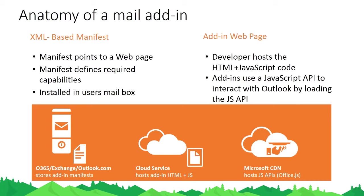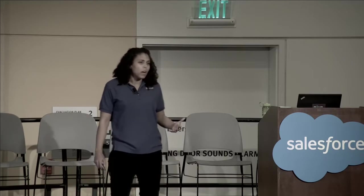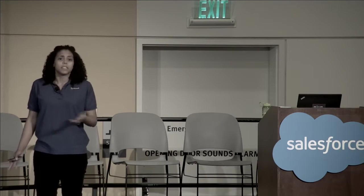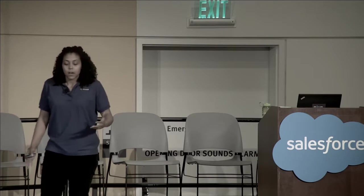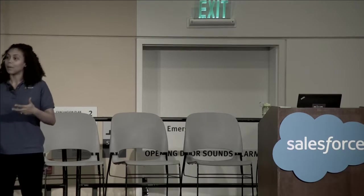There are two main components that make up an add-in. The first is the add-in web page — the HTML, JavaScript, and client APIs. The second, and a very key piece, is the XML-based manifest. This tells us where the web page is going to be, exactly what your add-in is going to do, whether it activates on reading or composing messages, what APIs it relies on, and how it appears — task pane or drop-down. This manifest is also how users install your add-in and how it appears in their mailbox.